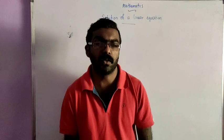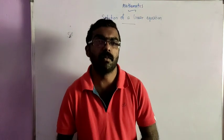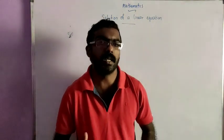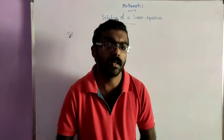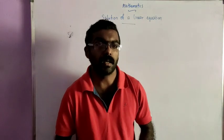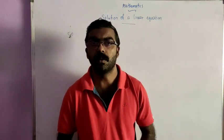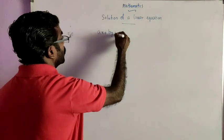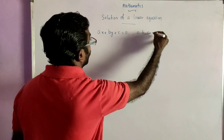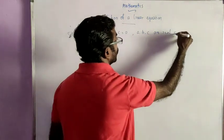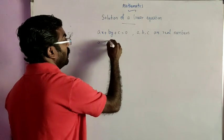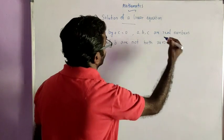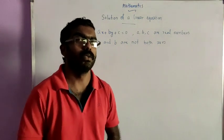Namaste and welcome back to another session of online Mathematics class. In this session we move on to the topic: solution of a linear equation in two variables. We all know the general form of a linear equation in two variables is ax plus by plus c is equal to 0, where a, b, c are real numbers and a and b are not both 0. This is called a linear equation in two variables.